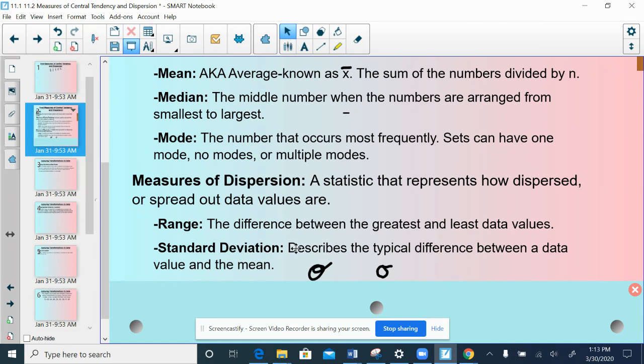The best way I can describe what the standard deviation does is it describes how far a typical data point is away from the mean. We're going to study this in depth in section 11.3.